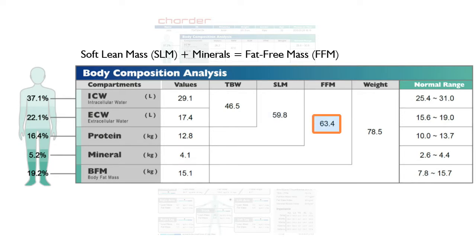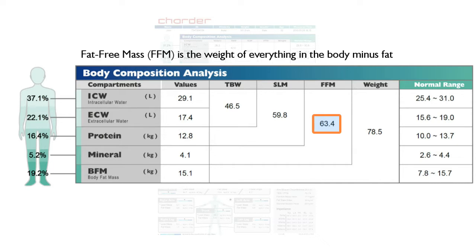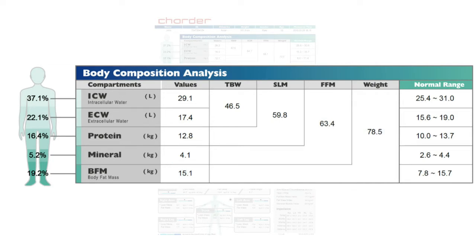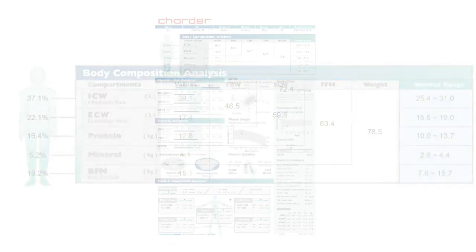Fat-free mass is the weight of everything in the body except for fat. So if you add body fat mass to fat-free mass, you'll get total body weight. At the right-hand side, we provide reference ranges for the various compartments. But in general, we'd recommend using the other parts of the results sheet, as they're designed to be easier to understand.